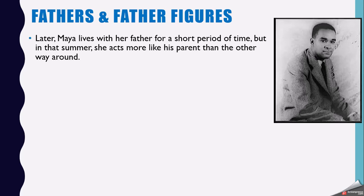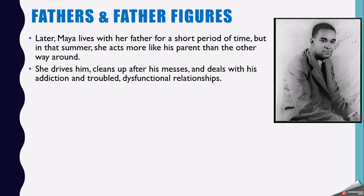Later on, she lives with her father for a short period of time, and what to notice here is a distinct role reversal. By the time they're reunited, especially in San Francisco, Maya's mother does try to parent her. But her father does not try to parent her at all. In many ways, she is more like his parent than the other way around. She drives him, cleans up after his messes, deals with his addiction and dysfunctional relationships, interacting with his girlfriend almost like she's her sibling rather than an adult in her life.